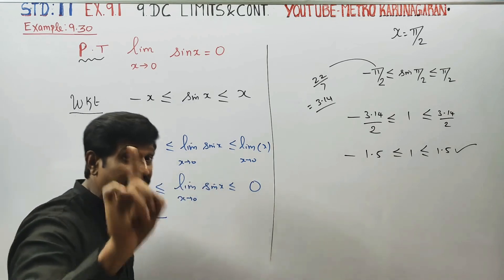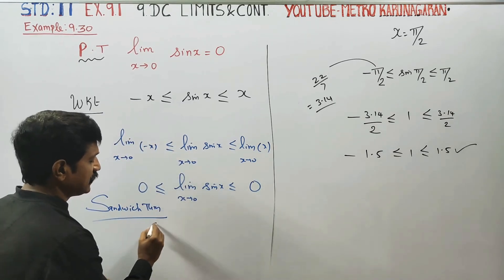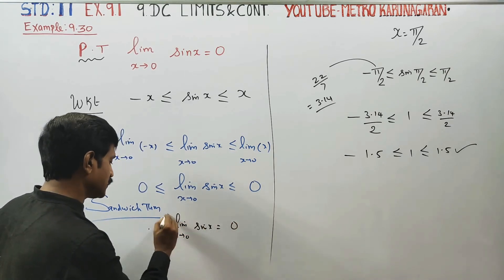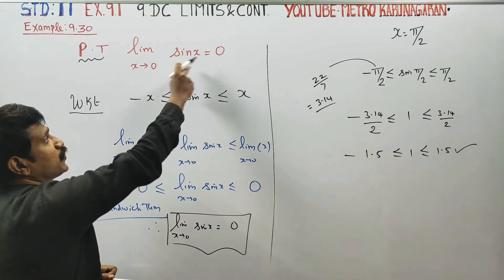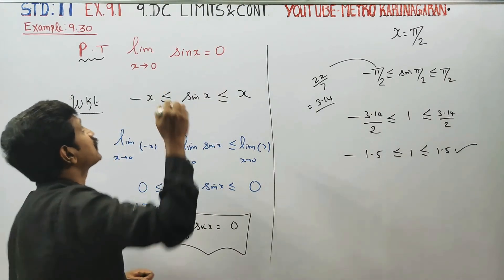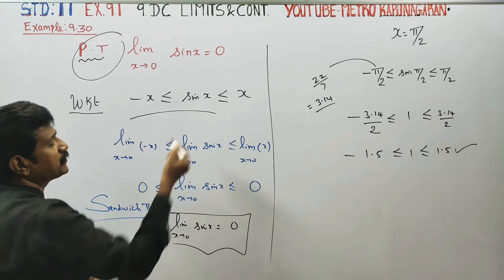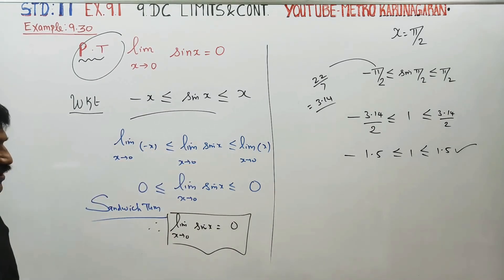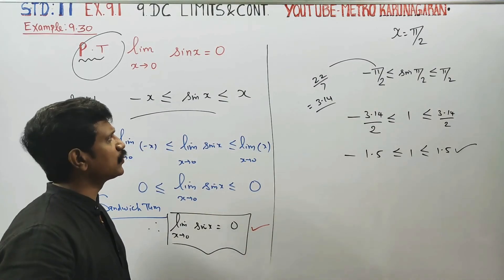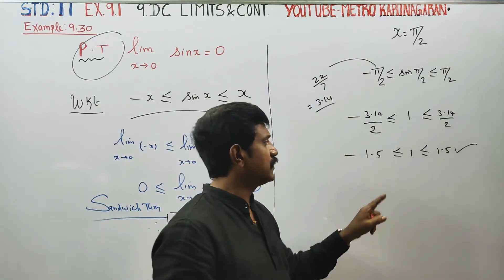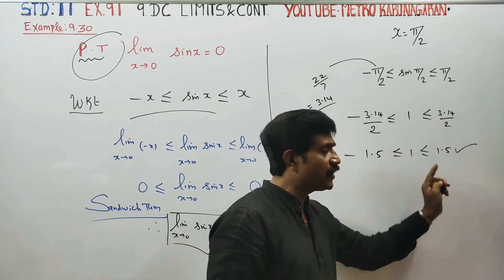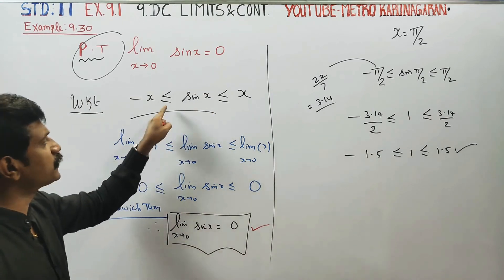By the sandwich theorem, this gives us the final answer: therefore, limit as x→0 of sin x equals 0. If we just substitute in one step, sin 0 equals 0, but we needed to prove it using the sandwich theorem. After finishing this proof, you will understand why we can't just substitute when x equals 0.